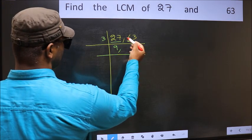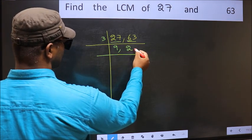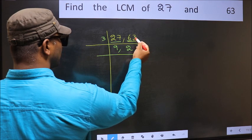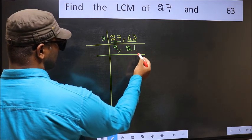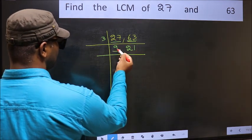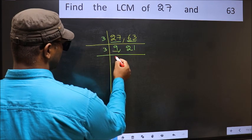3 into the first number gives 9. When do we get 9 in the 3 table? 3 times 3 is 9. The other number: 3 times 7 is 21. Now here we have 9. 9 is 3 times 3 equals 9.